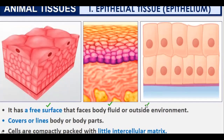Epithelial tissue faces blood or the outer environment. It lines and covers the body and body parts — our skin is also epithelial tissue. The cells are compactly packed with little intercellular matrix; intercellular spaces are very limited and essentially not present.